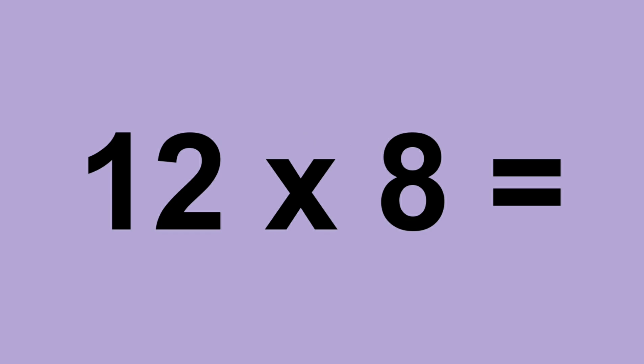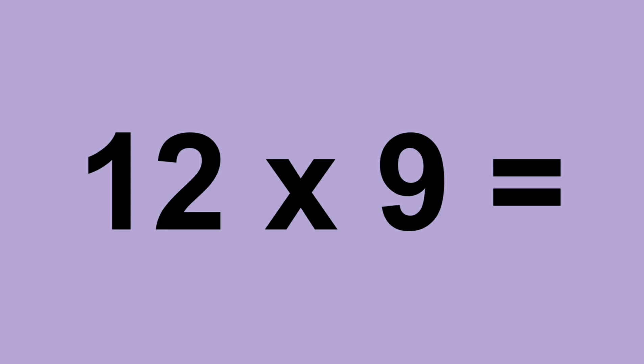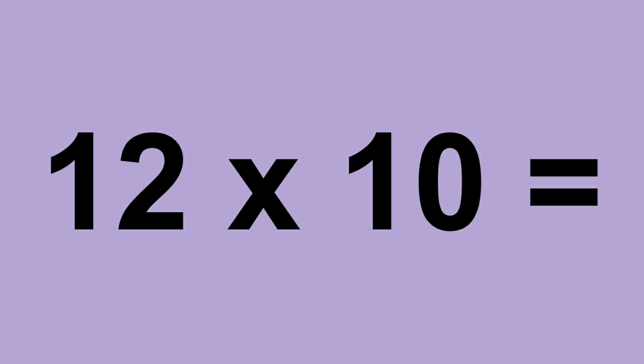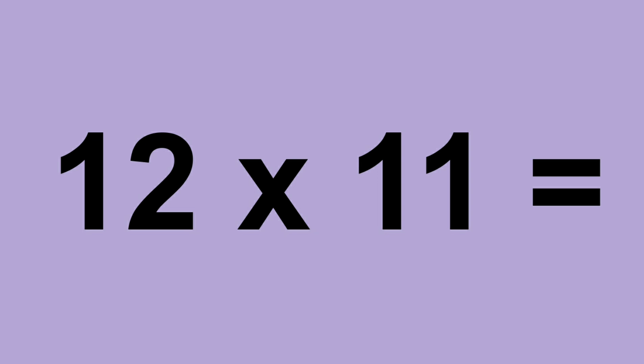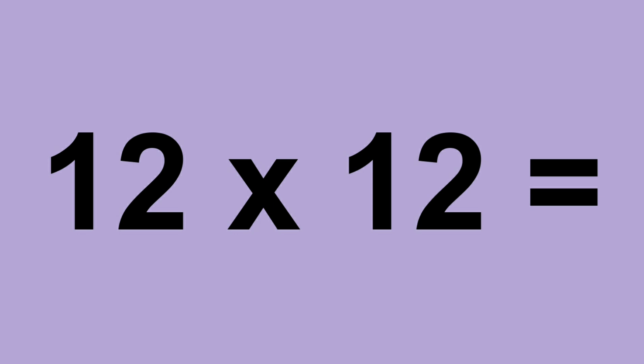Twelve times eight equals ninety-six. Twelve times nine equals one hundred and eight. Twelve times ten equals one hundred and twenty. Twelve times eleven equals one hundred and thirty-two. Twelve times twelve equals one hundred and forty-four.